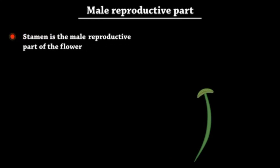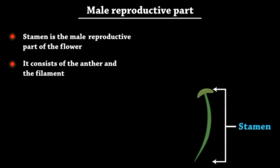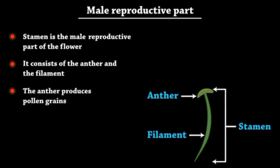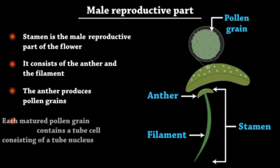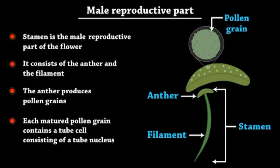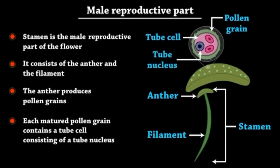Stamen is the male reproductive part of the flower. It consists of the anther and the filament. The anther produces pollen grains. Each matured pollen grain contains a tube cell consisting of a tube nucleus and two male gametes.